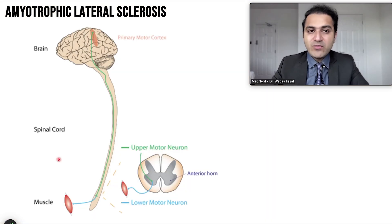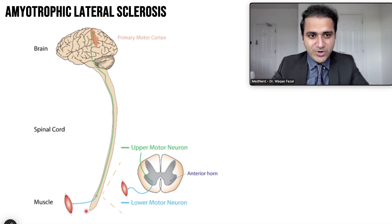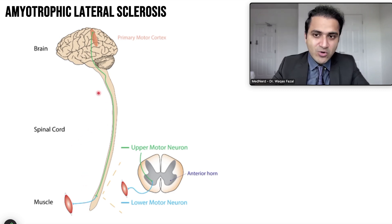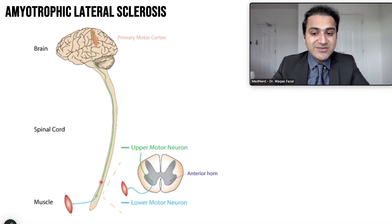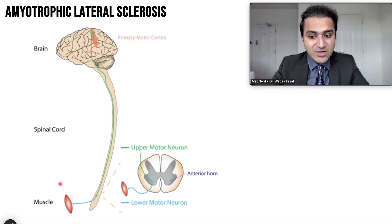To understand Amyotrophic Lateral Sclerosis, you need to understand what upper motor neuron and lower motor neuron mean. All the neurons present in the brain and spinal cord are called upper motor neurons. All the neurons that arise from the spinal cord and innervate the muscles and organs are called lower motor neurons.